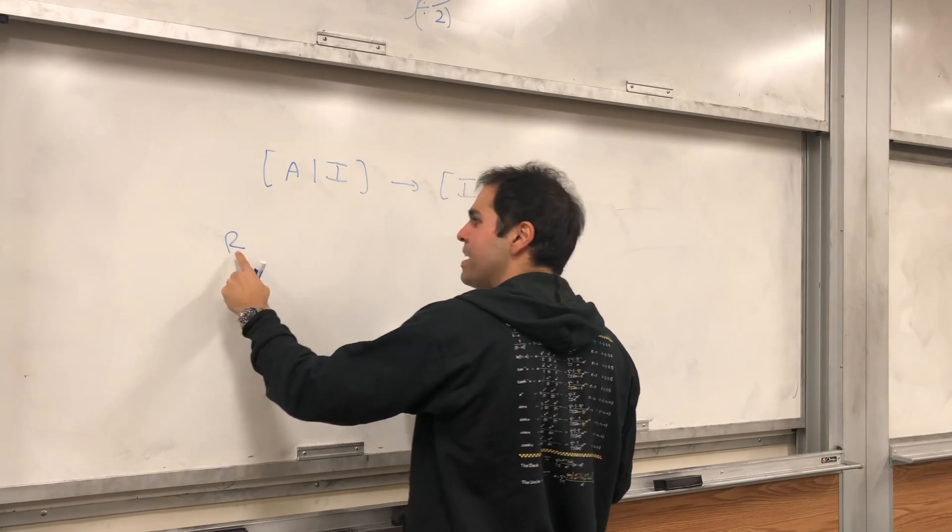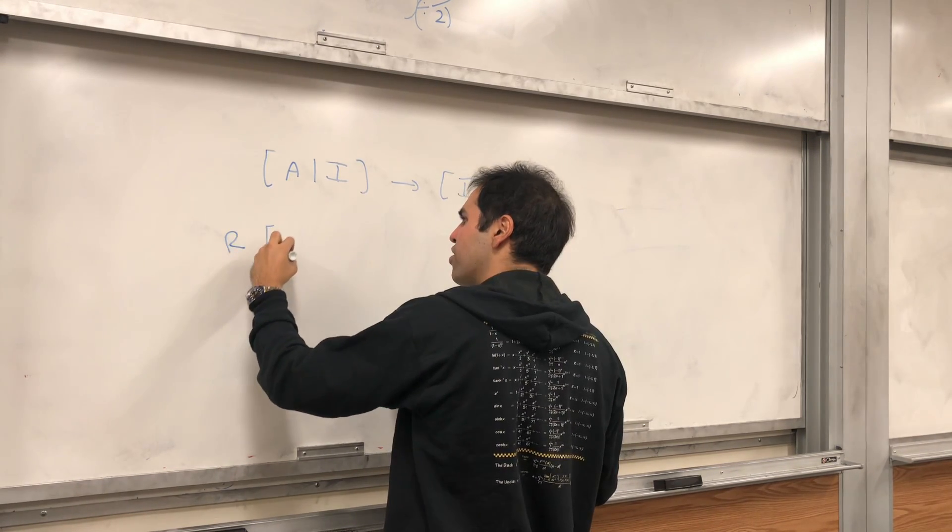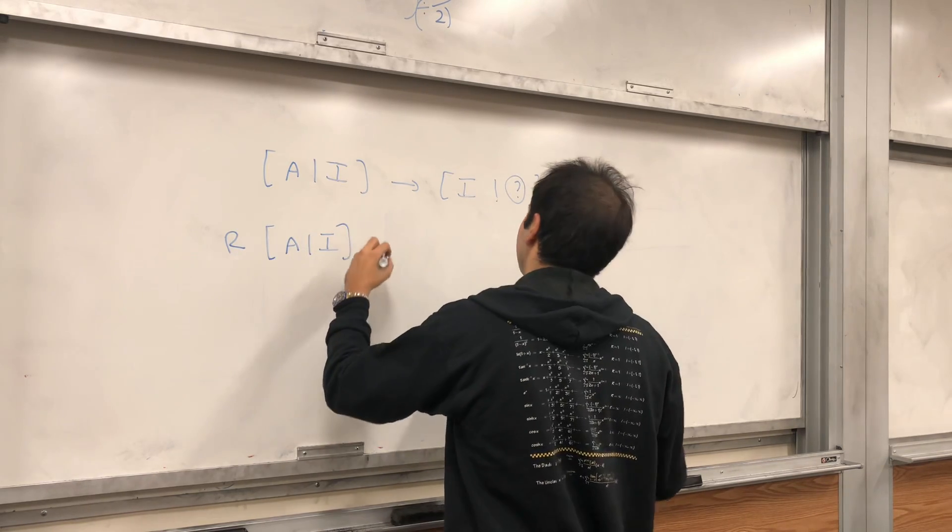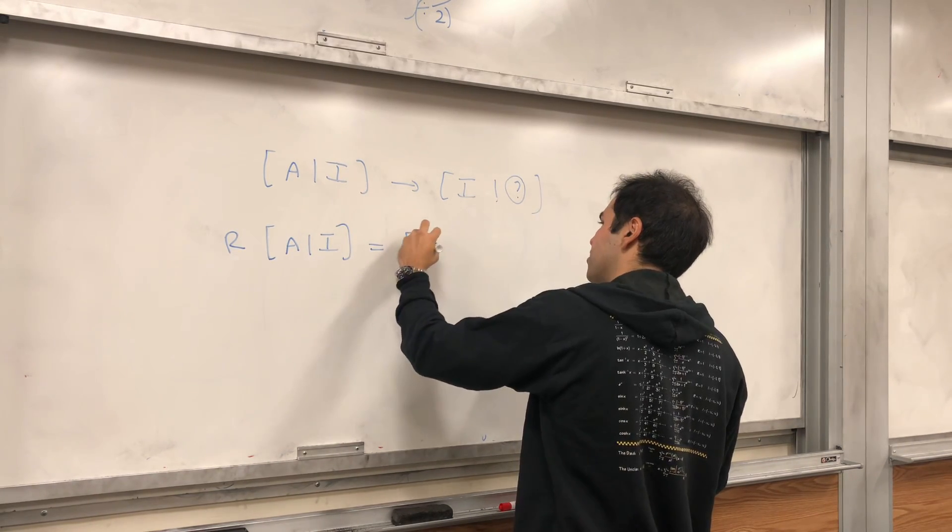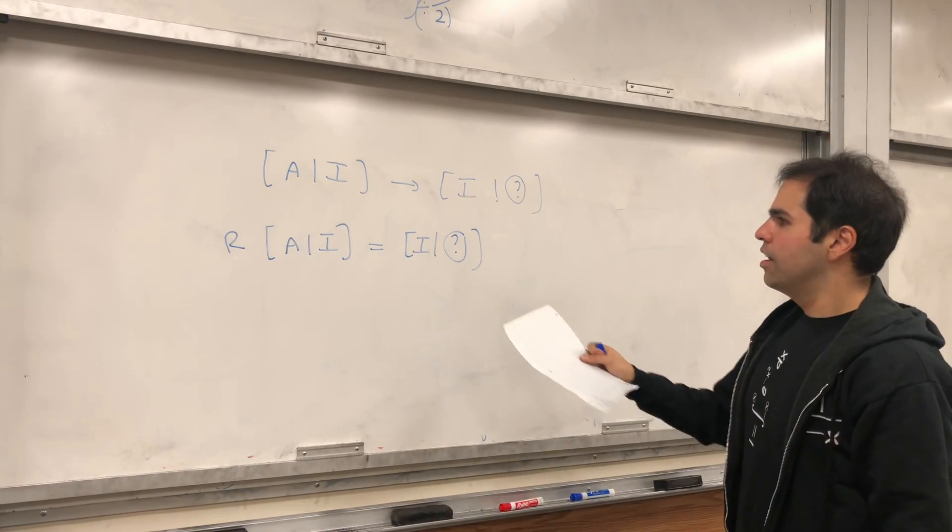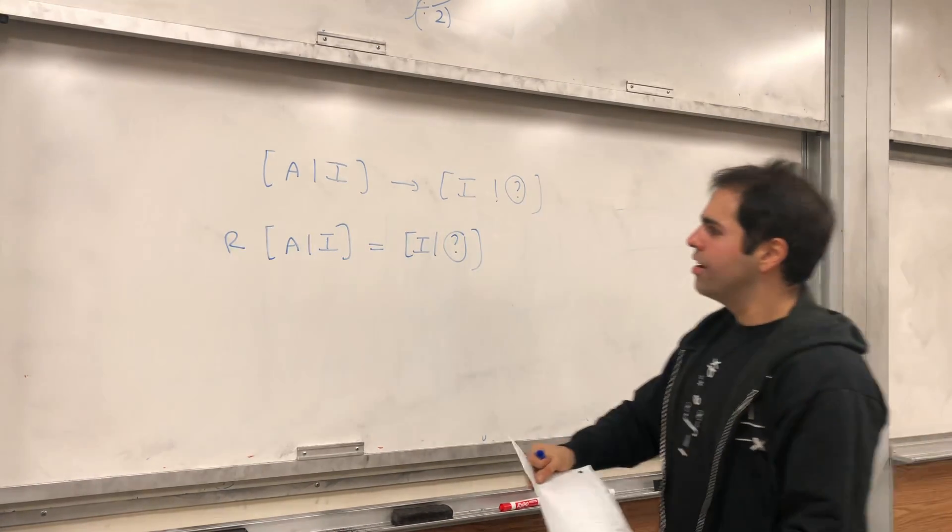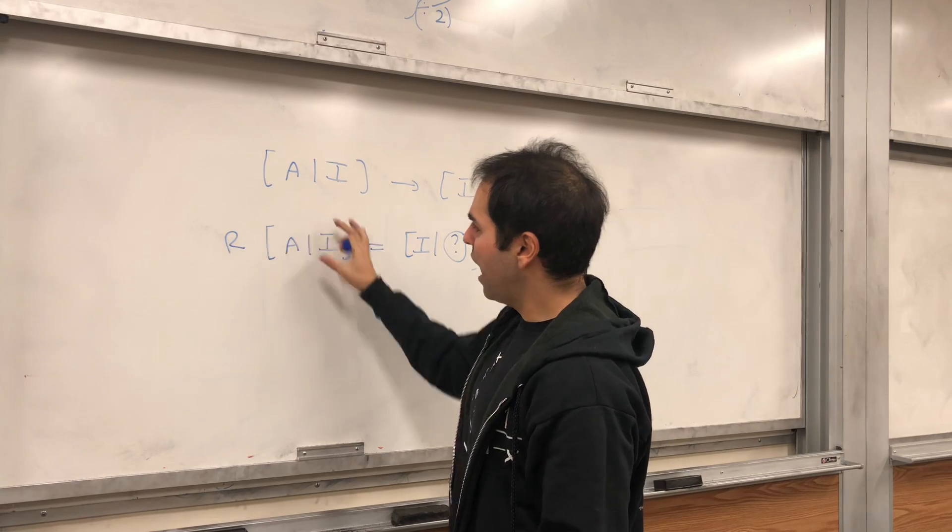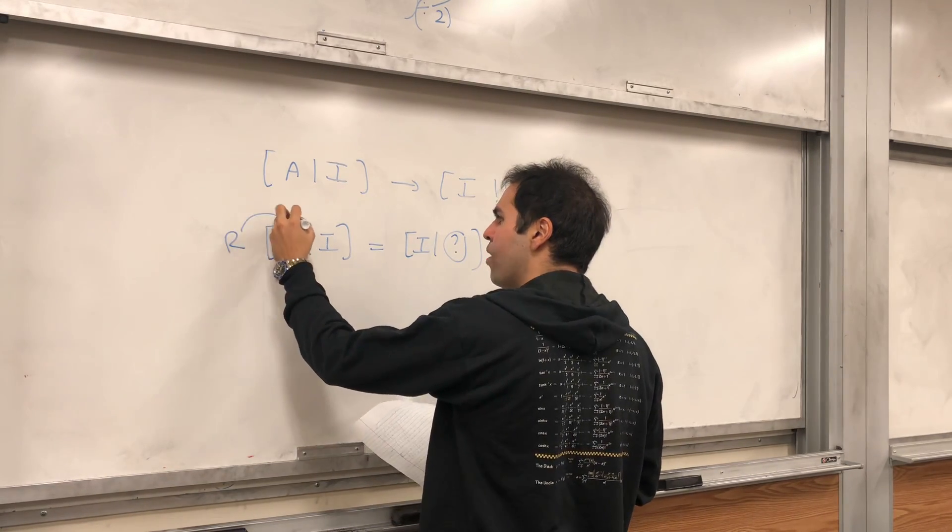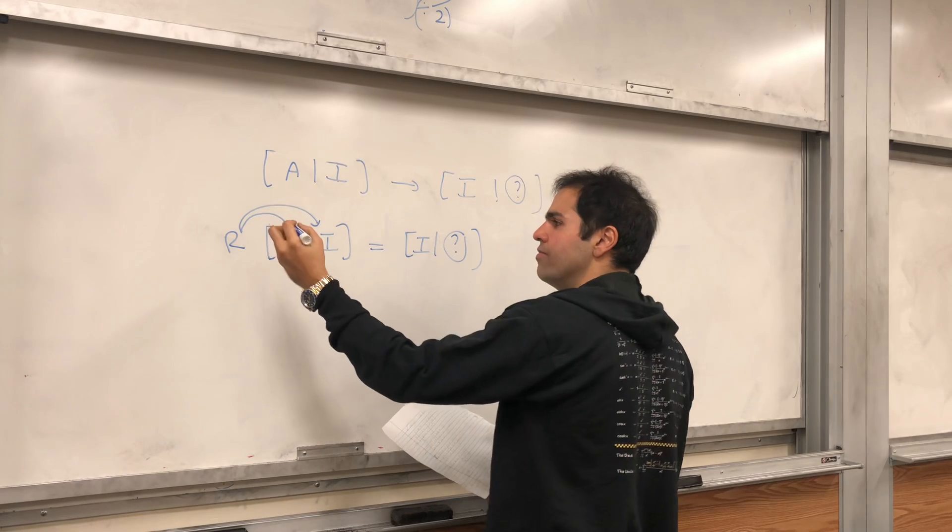So, in other words, there's this huge matrix R that if you multiply it to A, I, you get something I and something else. But now you have to remember one nice thing about matrix multiplication is that you can really multiply every column individually.